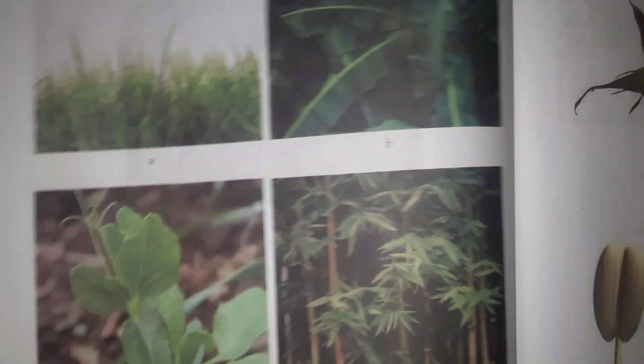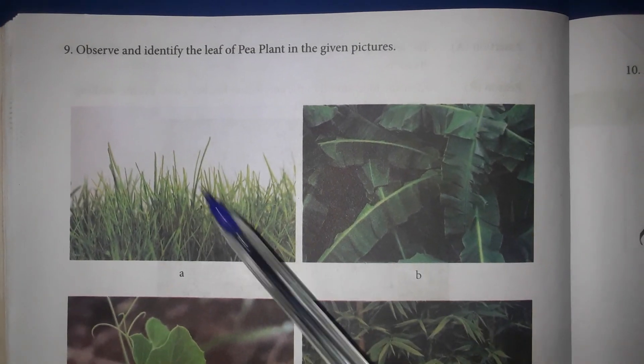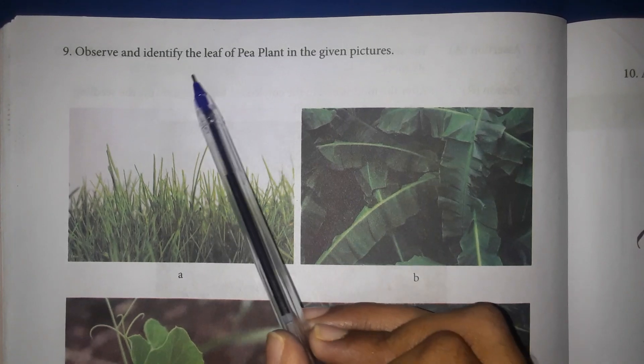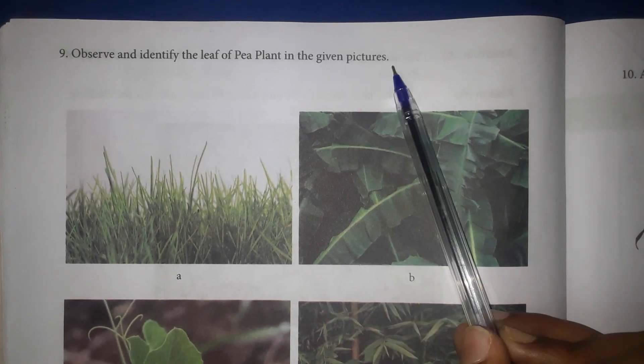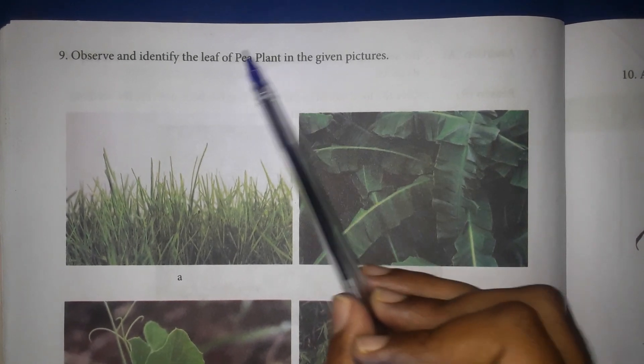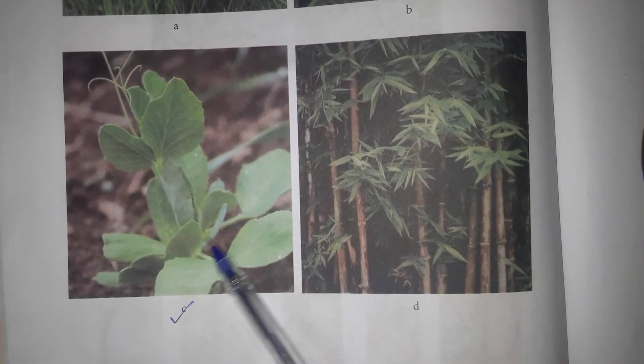Question 9: Observe and identify the leaf of the pea plant in the given pictures. Answer C.